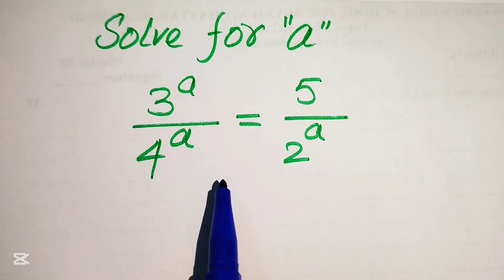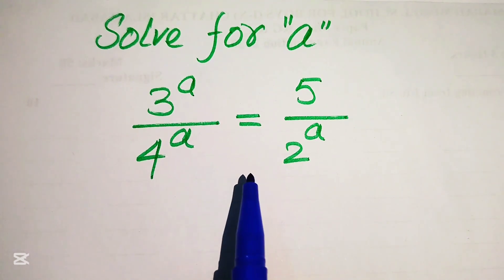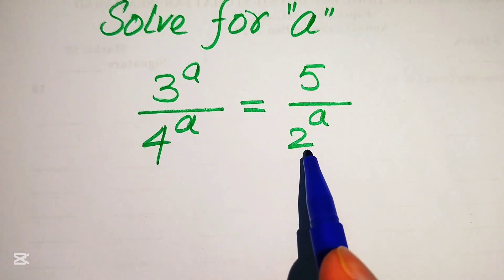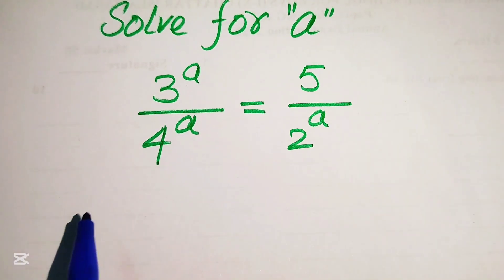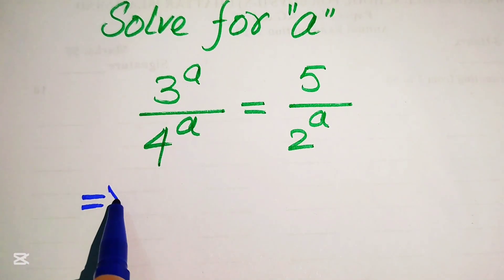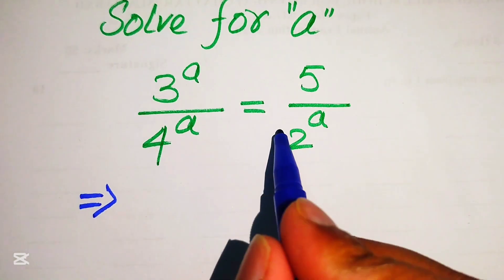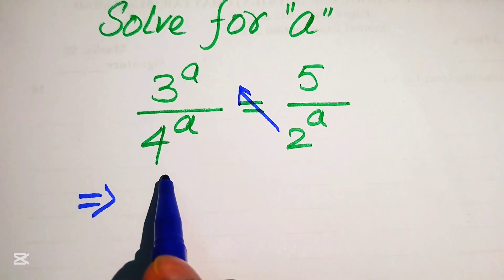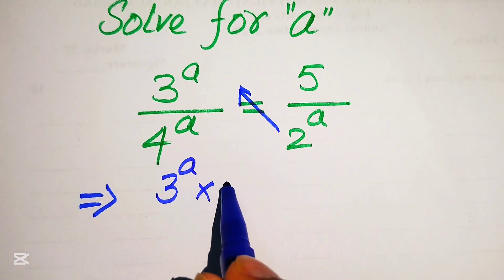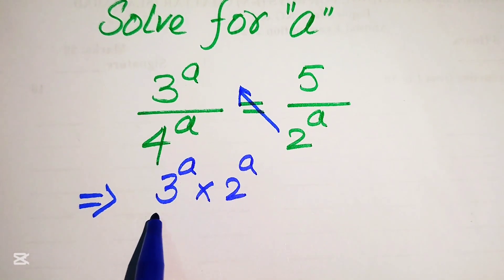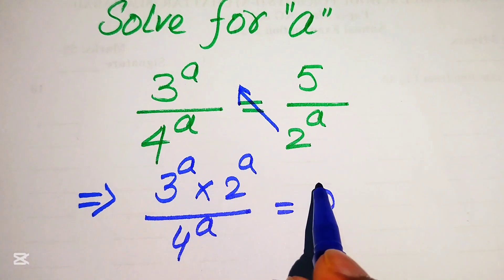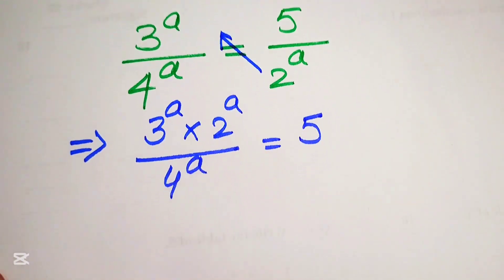First we need to move all of the exponential terms to one side. This 2 to the power of a is divided on the right hand side, so when you move it to the left hand side this term is multiplied — we need to cross multiply the terms. So it will be written as 3 to the power of a multiplied by 2 to the power of a divided by 4 to the power of a, and this whole equals to 5.